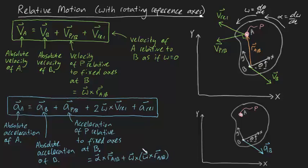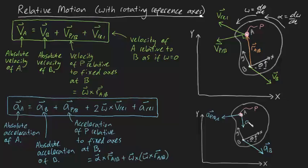This formula should look familiar — it resembles circular motion formulas, which makes sense because point P is fixed to the plate and point B is also fixed to the plate, so P undergoes circular motion relative to B. Drawing the accelerations, you get a tangential acceleration a_P/B in the tangential direction, equal to alpha × r, and a normal acceleration a_P/B in the normal direction, equal to omega² × r. That's where these cross products come from.